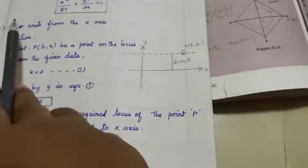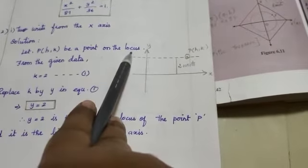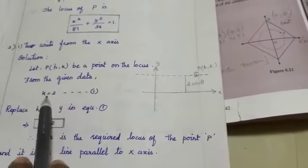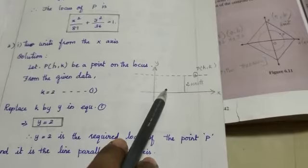So let P(H, K) be a point on the locus. Okay, then from the given data K equal to 2. Y means this is moving on x-axis.